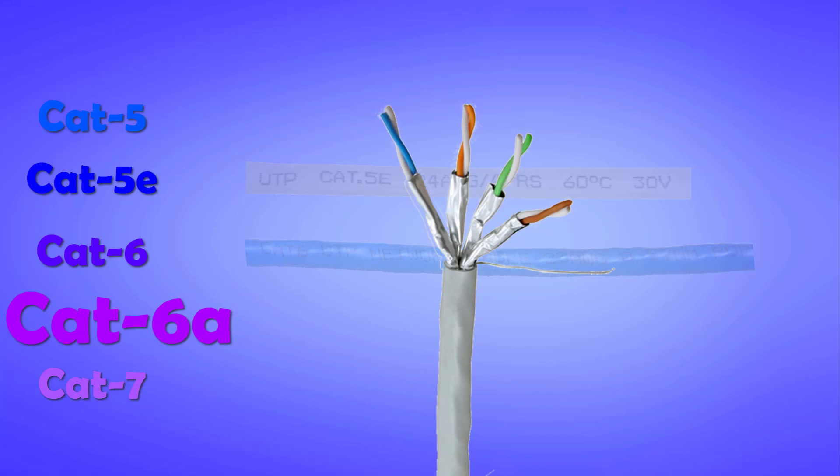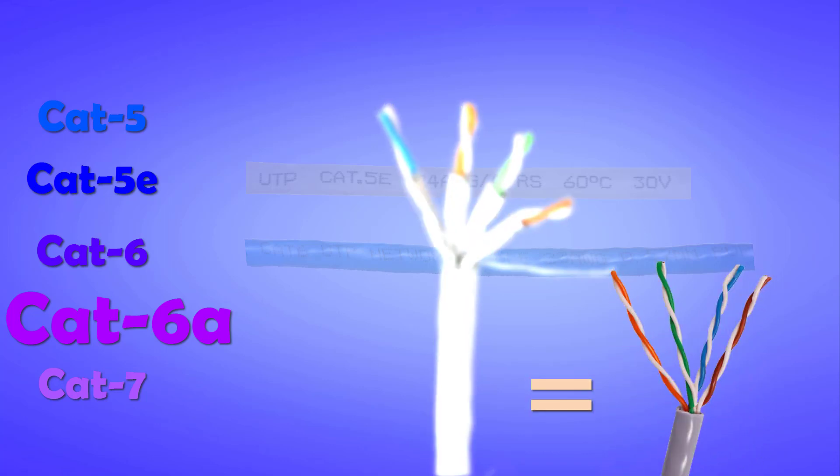The standard testing length of any cable is 100 meters or 325 feet. All cables are tested at this standard length. The shorter the cable, the better it will perform. And it is possible that on shorter lengths, like a couple of meters, a simple Cat5 may perform equally as an upgraded Ethernet cable.